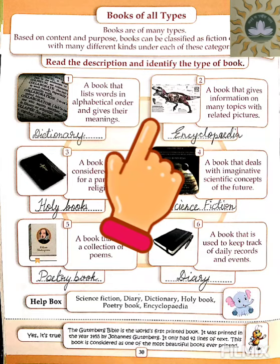Number two: a book that gives information on many topics with related pictures — where various subjects are explained with images. This type of book is called an encyclopedia. E-N-C-Y-C-L-O-P-A-E-D-I-A. Encyclopedia.